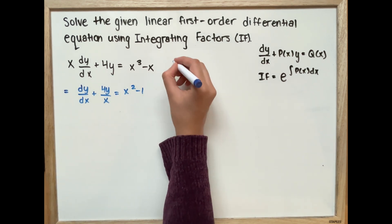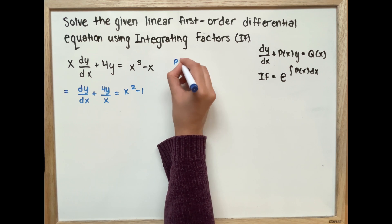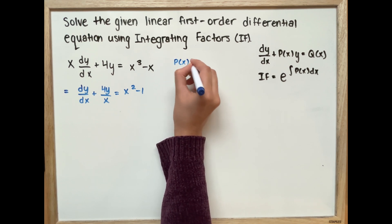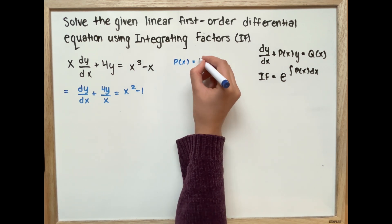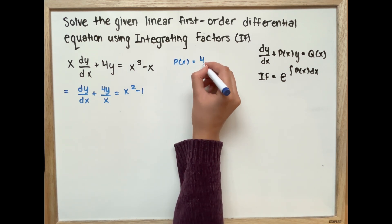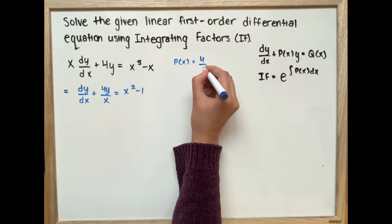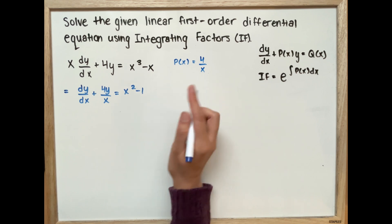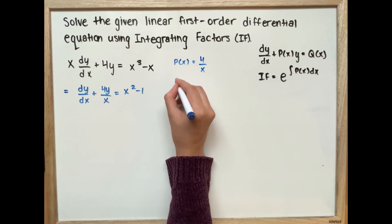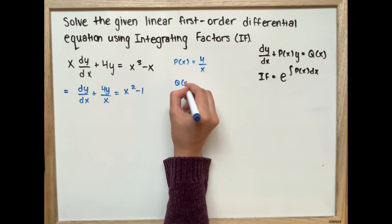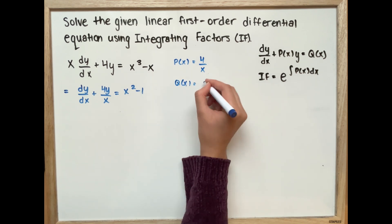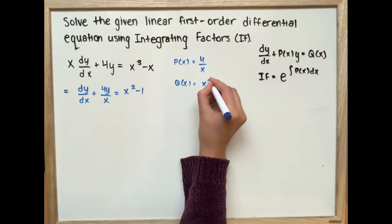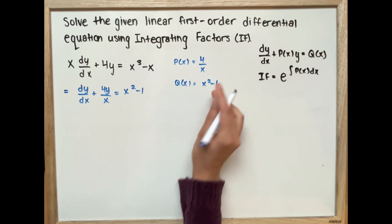Now we define P(x), which is going to be 4 over x, and Q(x), which is x squared minus 1.